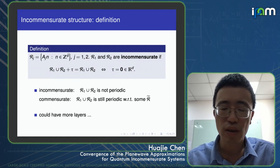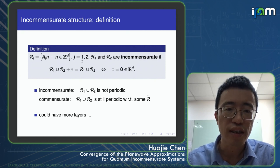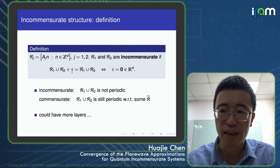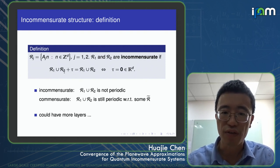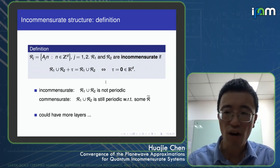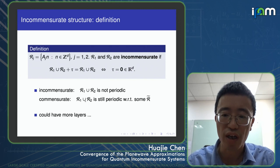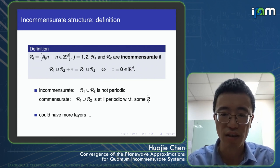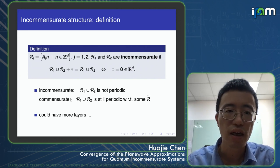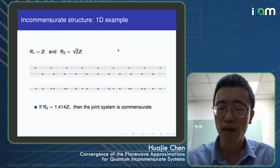When we have two or more periodic lattices together, we may lose translation invariance, giving us the incommensurate structure. For two periodic structures together, we have two periodic lattices R1 and R2. If the joined system loses translation invariance, we call this system incommensurate. It is still possible that the union of two periodic structures remains periodic with respect to some other lattice constant — in that case we call it a commensurate system. This definition can be extended to three, four, or more layers.